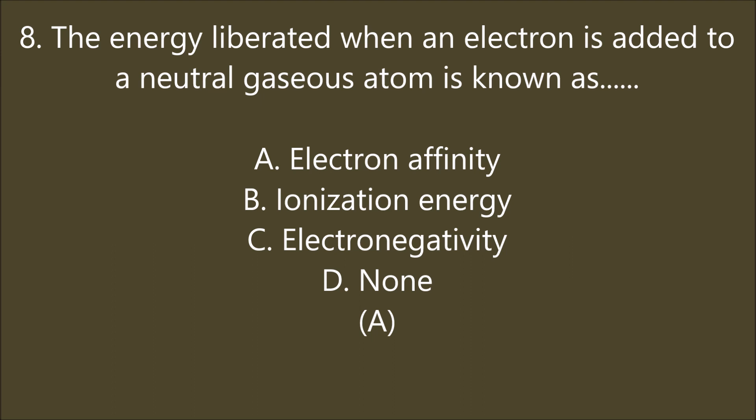The energy liberated when an electron is added to a neutral gaseous atom is known as: electron affinity, ionization energy, electronegativity, or none. A is the right answer — electron affinity. It has another name: electron gain enthalpy. Its value decreases as we go down in a group, but increases along a period from left to right.